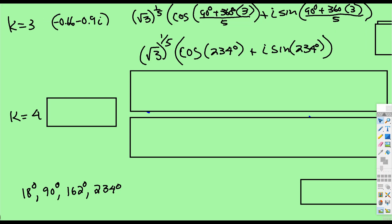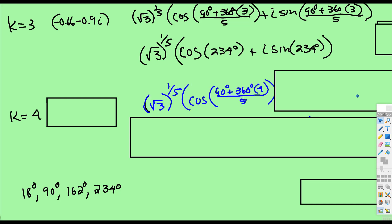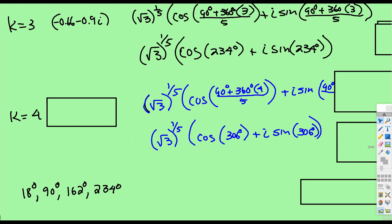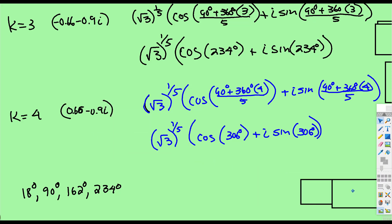And then when we plug in 4 for k, or we add 72 degrees, we get that 306. And when we multiply it out, that was a 6, I started to put 5. So we have positive 0.66, subtract 0.9.